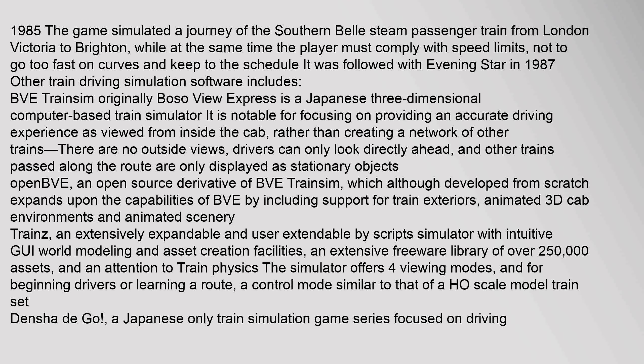In 1985, a game simulated a journey of the Southern Belle steam passenger train from London Victoria to Brighton, while the player must comply with speed limits, not go too fast on curves, and keep to the schedule. It was followed with Evening Star in 1987.